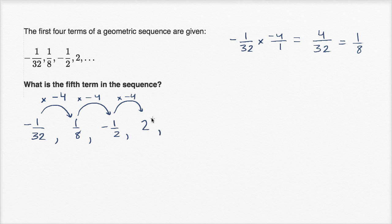And so to get the fifth term in the sequence, we would multiply by negative four again. And so two times negative four is negative eight. Negative four is the common ratio for this geometric sequence. But just to answer the question, what is the fifth term? It is going to be negative eight.